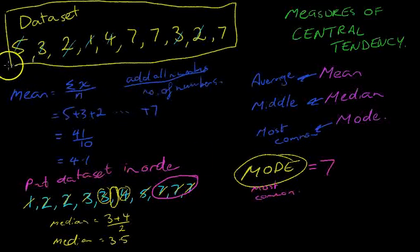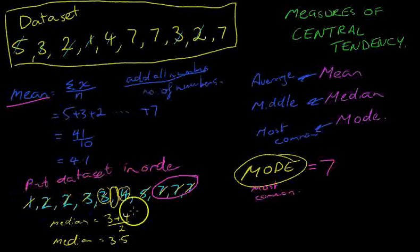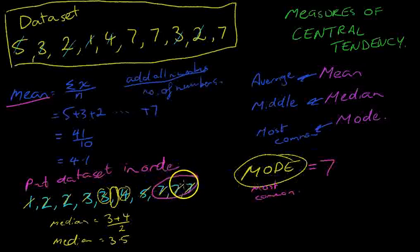So the average or the mean, add up all the numbers and divide it by the number of numbers. That's the mean. The median is the middle number. Find the middle number of a data set. And the mode is the most common number. In this case, 7. Those are measures of central tendency.